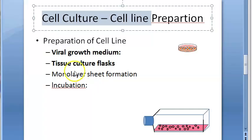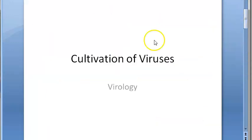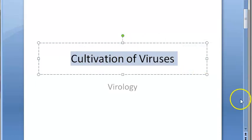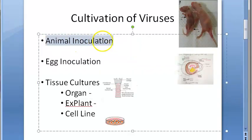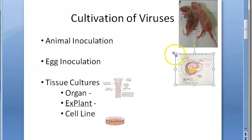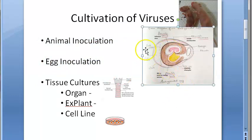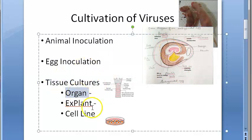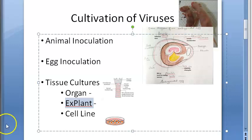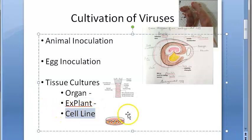In this video we want to look at cell line culture for virus. We started off in the last video with cultivation of virus — animal inoculation with suckling mice, egg inoculation in chick embryo, and tissue culture including organ culture like tracheal ring culture for coronavirus and adenoid explant for adenovirus. Now we are moving on to cell lines, which is a very elaborate topic, so we are making a separate video.